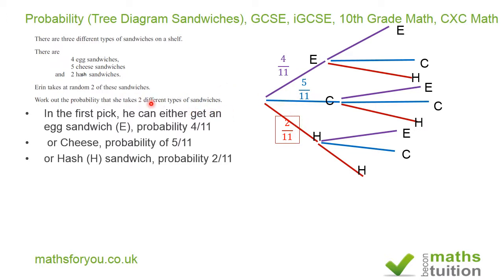The question asks for the probability that she takes two different types of sandwiches. What I'm going to do is work out the probability of picking two sandwiches of the same type, and then subtract from 1 to give the probability that she takes two different types of sandwiches.